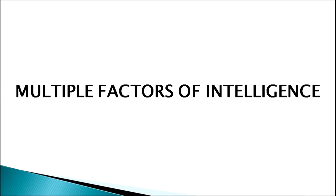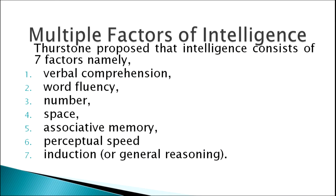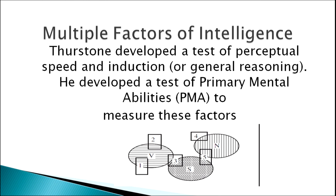Next comes the multiple factor theory of intelligence, also part of the factorial viewpoint, given by Thurston. Thurston proposed that intelligence consists of seven factors: verbal comprehension, word fluency, number, space, associative memory, perceptual speed, and induction — or general reasoning ability. Thurston developed a test of primary mental abilities, known as PMA, to measure these different factors.